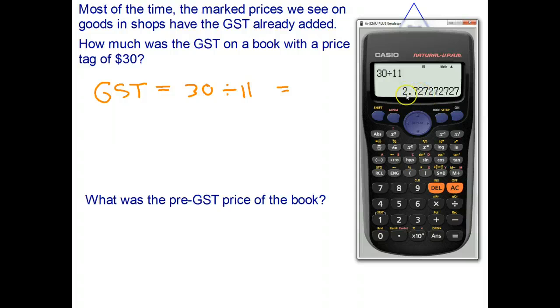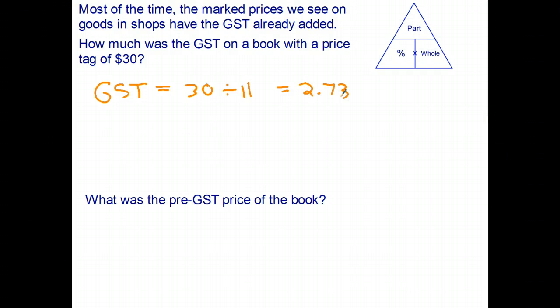What was the pre-GST price of the book? Well, there's two ways we can do this. The first way is we can just go 30 subtract $2.73. That's going to be 30 take 2 is 28, take another 73 cents means it's going to be $27.27. That's the pre-GST price of the book. Add the $2.73 on that brings us back to the price tag of $30.